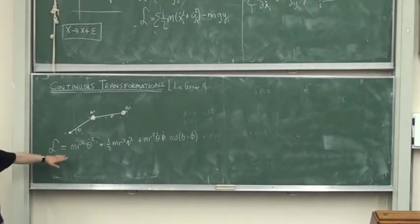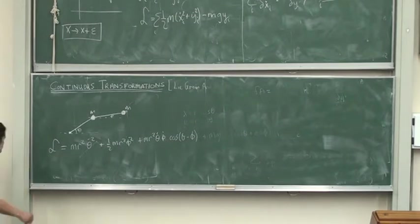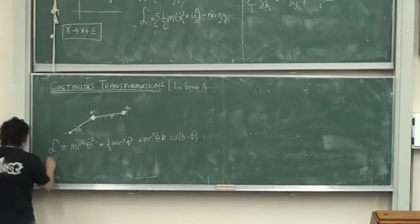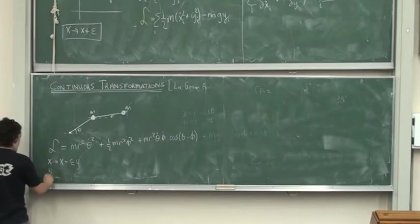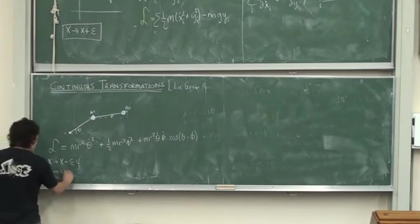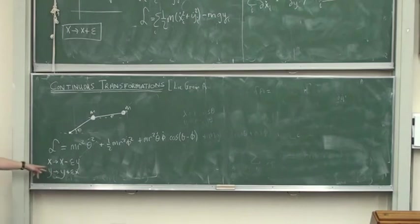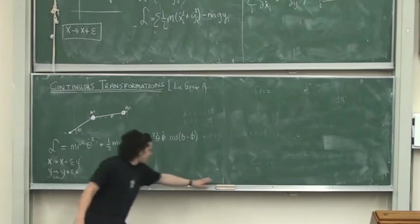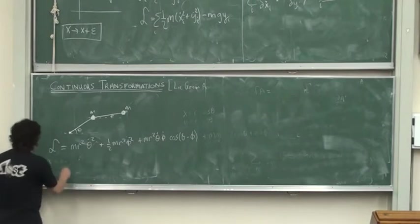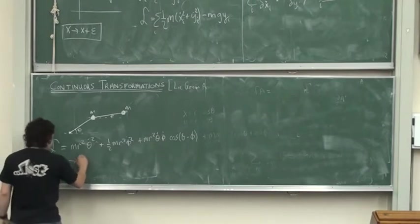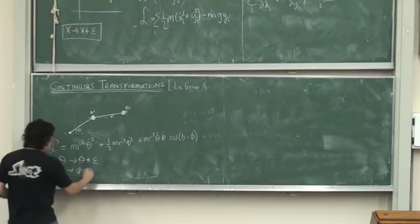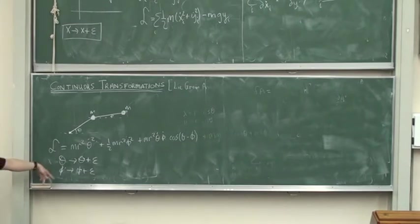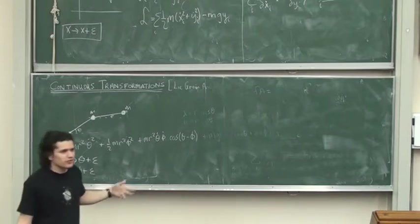Now, this is my Lagrangian. And this Lagrangian is invariant under x to x minus epsilon y, and y to y plus epsilon x. In fact, we don't need to do it like this. In this case, we can do it with theta and phi. So it's just theta to theta plus epsilon and phi to phi plus epsilon. The invariance, in this case, is in theta and phi. And since they are already rotational things, we just add epsilon.